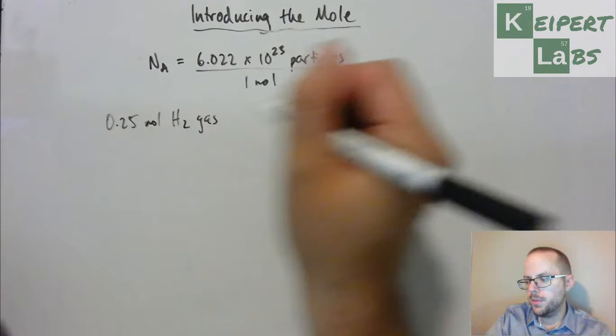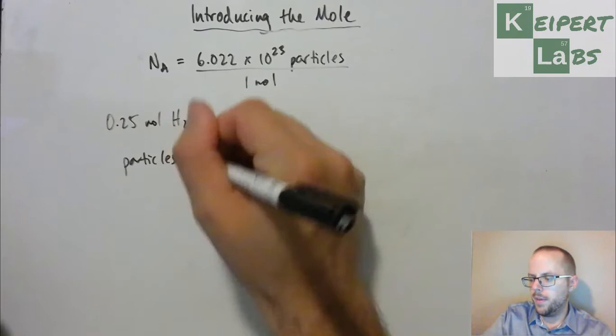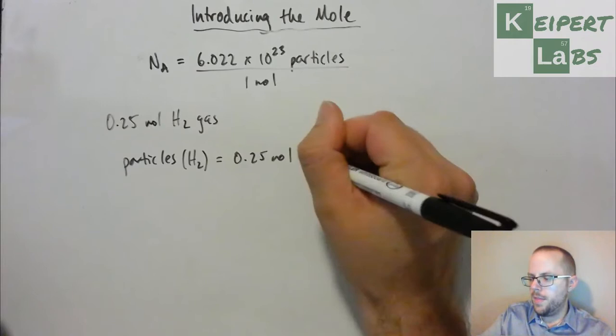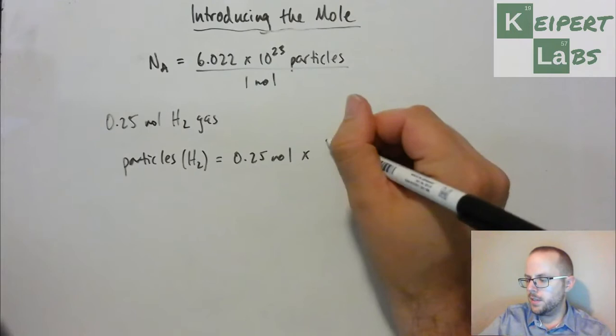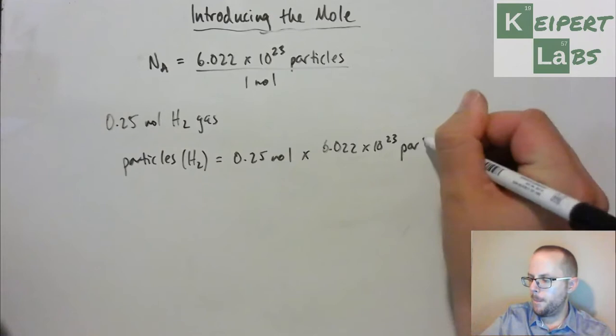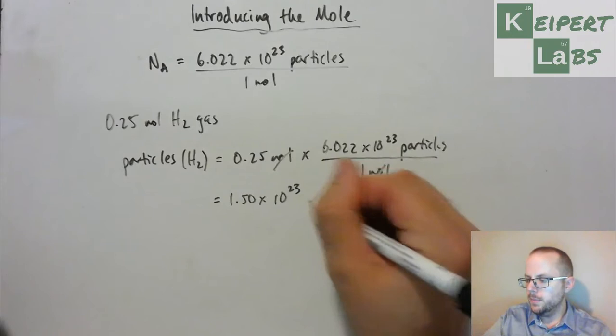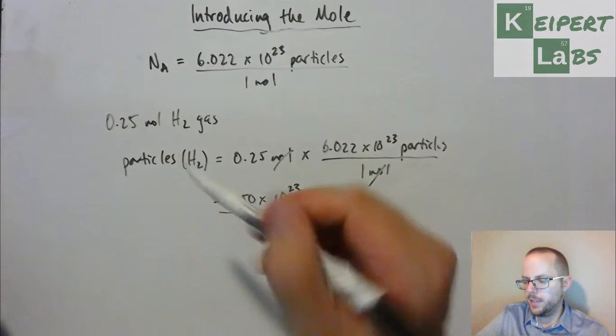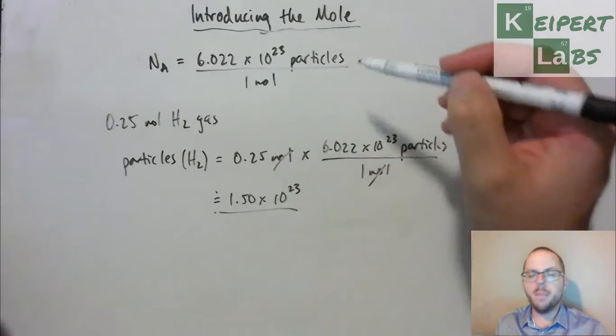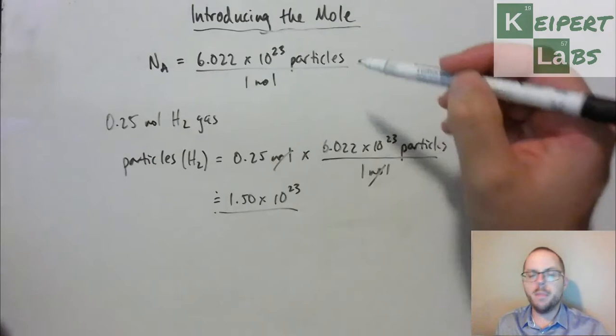And then, we want the units we want over the units we have, which we'll be keeping it this way around, 6.022 times 10 to the 23 particles for every one mole. That's going to cancel out. So, we get 1.50 times 10 to the 23. So, rounding that to three significant figures. So, we can use this as a conversion factor to work out how many particles we have for every mole of a substance.